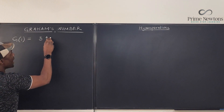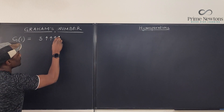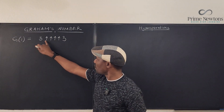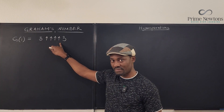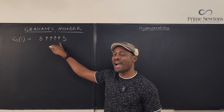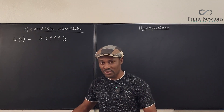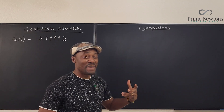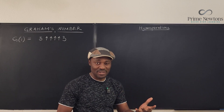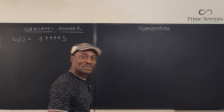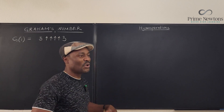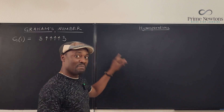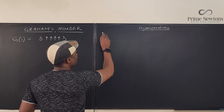We'll come back to what this operation with four arrows means. It's called hexation — the sixth hyper operation. Let me quickly explain what hyper operations are. You're already familiar with many of them, except maybe two or three. They are usually recursive because each depends on the previous operation. Let's start with incrementation.